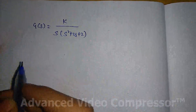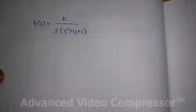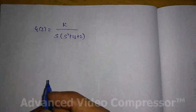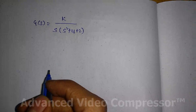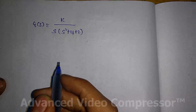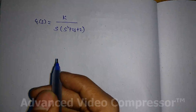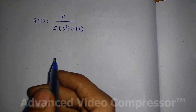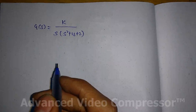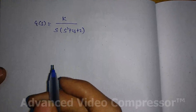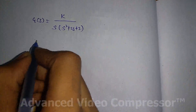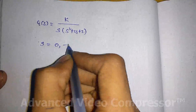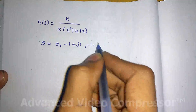Now in order to solve this, I will give you a step-by-step procedure. First of all, you need to find out the poles. Poles are found by equating the denominator of the closed-loop transfer function to 0. If you equate the numerator equal to 0, you get zeros. Equating the denominator equal to 0, the possible values for s are: s = 0, s = −1 + j1, and s = −1 − j1.